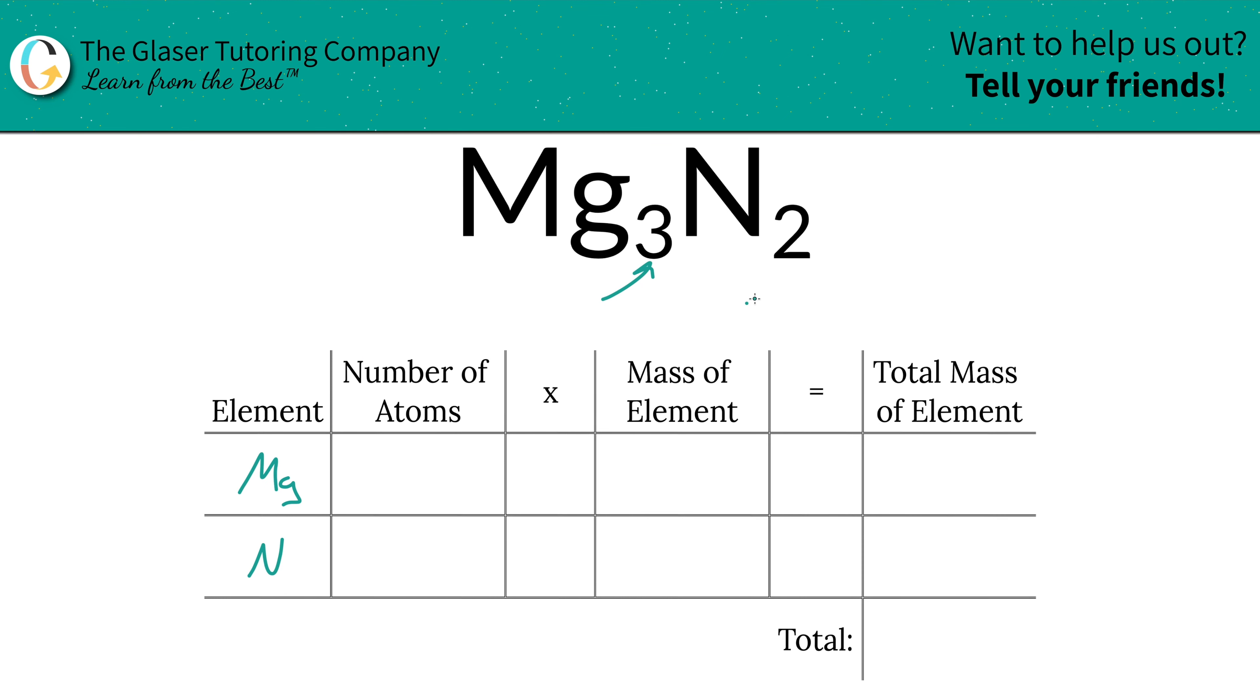Next is to identify the number of atoms and that's where the subscripts come into play. So there are three magnesium and there are going to be two nitrogen.